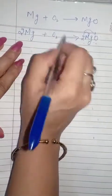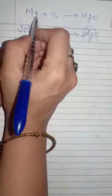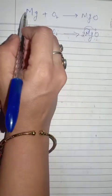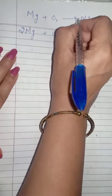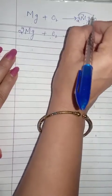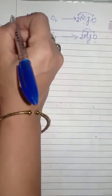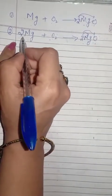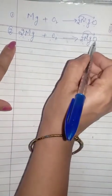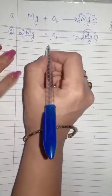This is the second method to balance an equation. For example, magnesium plus oxygen combine to form magnesium oxide (MgO). On the left side we have one magnesium, on the right side also one magnesium. Oxygen is 2 on the left but only 1 on the right, so we write 2 here. Now we have 2 magnesium and 2 oxygen on both sides — the reaction is balanced.